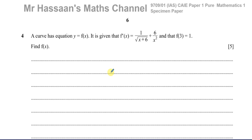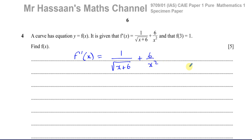P1 International A Level Exam. This question is about a curve which has equation y equals f of x, and we're told that f'(x), which is the first derivative of f of x, is given by 1 over the square root of (x plus 6), plus 6 over x squared. We're also told that if you substitute 3 into the original equation f of x, the output is 1.